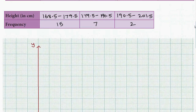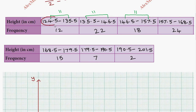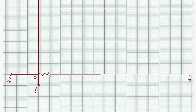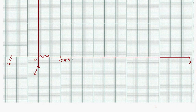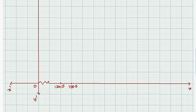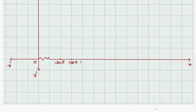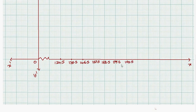We start the graph from 124.5 on the horizontal axis. The bars are drawn at intervals of 11 units: 124.5, 135.5, 146.5, 157.5, 168.5, 179.5. Each bar covers one class interval of 11 units width on the x-axis.